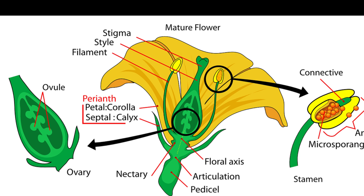B. Style — a slender tube connecting the stigma to the ovary. C. Ovary — the swollen base of the pistil that contains ovules, which hold female gametes.